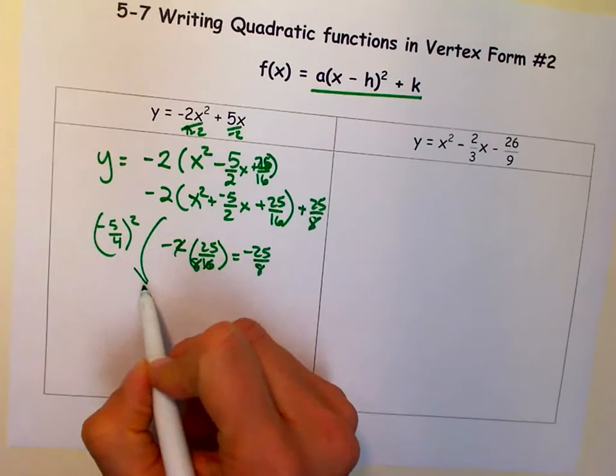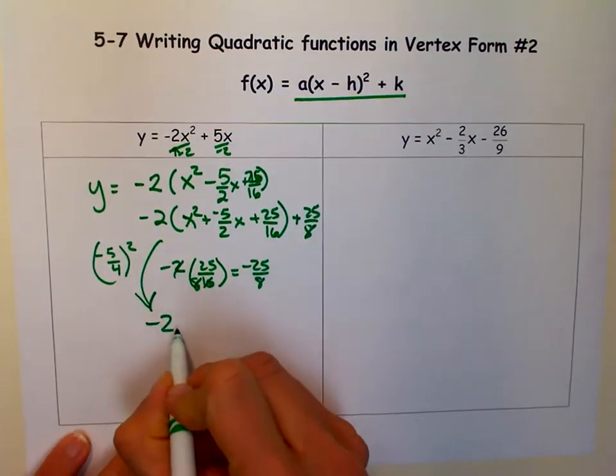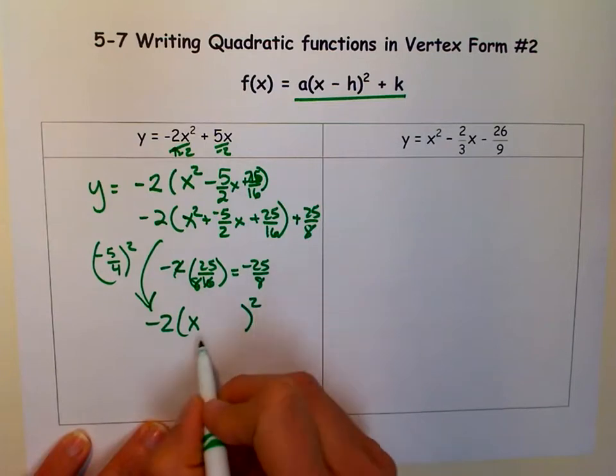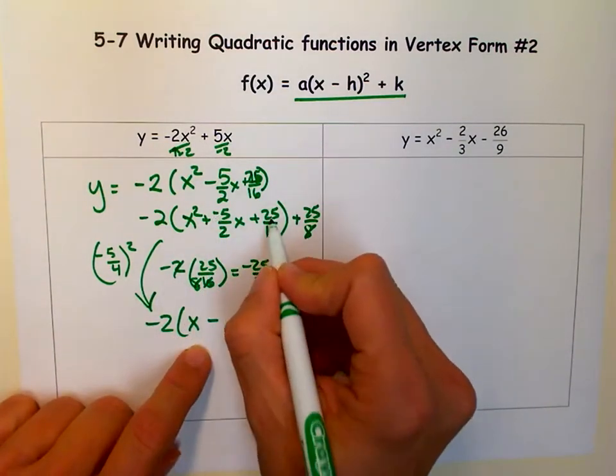And now we factor. So down here, we'll factor it. So we get negative 2 times x. Remember, the shortcut method is you take the square root of that, that sign, and the square root of that.